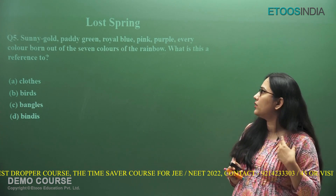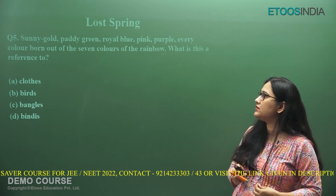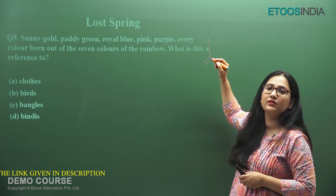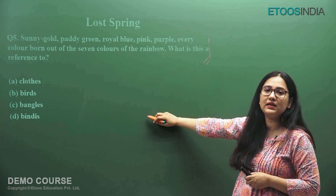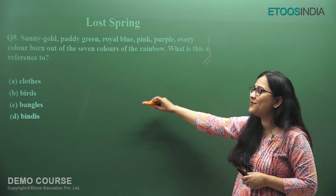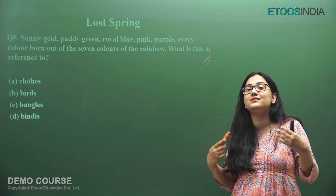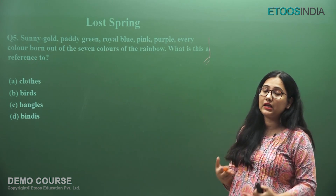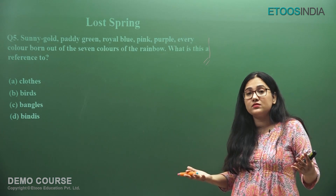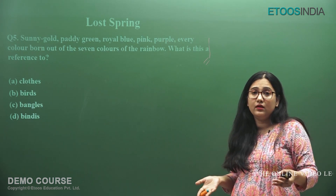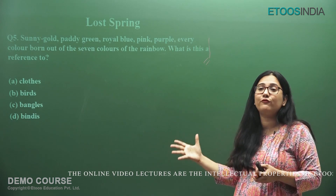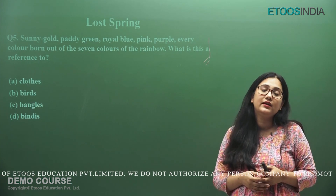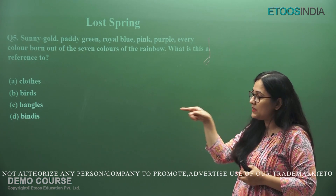Sunny gold, paddy green, royal blue, pink, purple — every color born out of the seven colors of the rainbow. This is a reference to the bangles that are being sold in Ferozabad. When the writer Anis Jung describes the city and the bangle industry, she says every color of the rainbow is available in the bangles here. Yet despite this colorful imagery, the people working in the industry and making these bangles live in sad conditions.